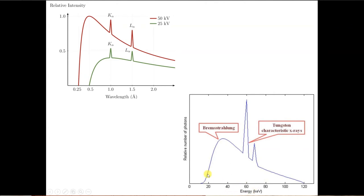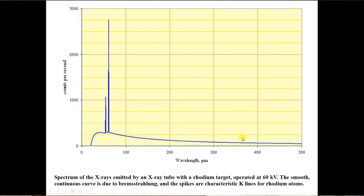Be careful, this graph here shows energy distribution versus the relative number of photons, X-ray photons that are being produced. So these peaks that are produced correspond to the characteristic X-ray production.